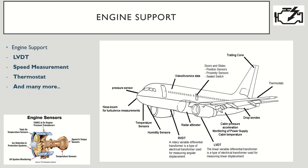For engine support, we have LVDT, speed measurement sensors, thermostats, and many more. Going deeper into engine sensors, we use speed and torque measurement sensors, temperature sensors, oil system monitoring, and ice detection and protection systems. When flying at 35,000 feet or above, the wings and external surfaces of the aircraft can get iced. When icing occurs, the aircraft must be de-iced, so I need to measure whether the ice level is safe to fly or requires immediate de-icing. Air temperature sensors are also used here — all these together form the engine support section.